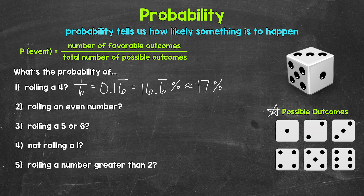Let's move on to number two: what's the probability of rolling an even number? So if we roll the die once, what's the probability we roll an even number? Let's start with the favorable outcomes. Out of the six sides of the die, how many are even numbers? We have two, four, and six — so three even numbers. Three is the number of favorable outcomes over the total number of possible outcomes, which is six. Our fraction is three over six — three sixths. There's a three out of six chance of rolling an even number. Now, three sixths can be simplified.